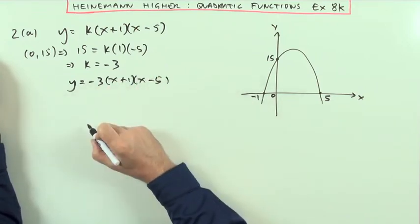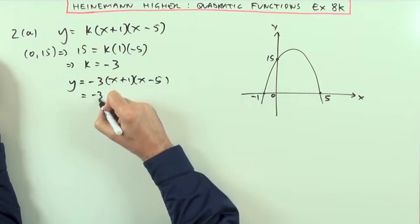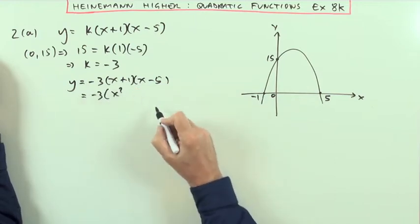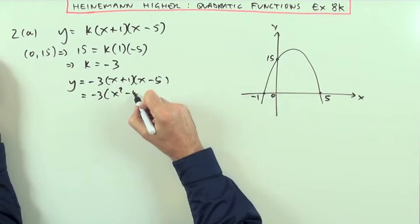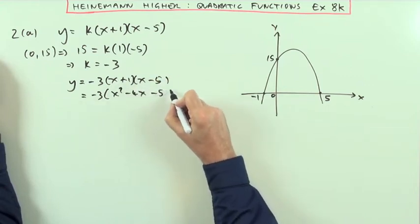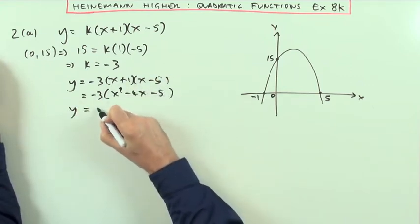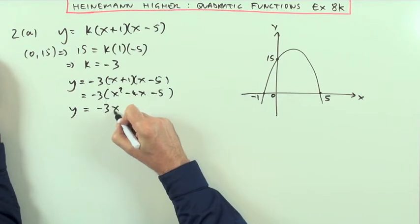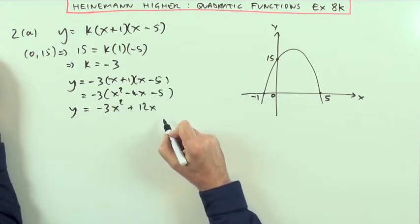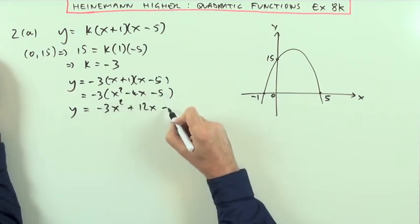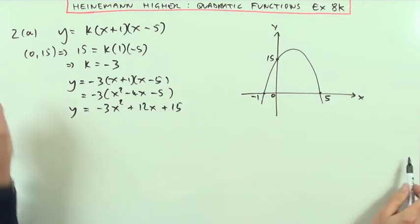Multiplying out now: negative 3 times X squared minus 4X minus 5, which gives negative 3X squared plus 12X plus 15.